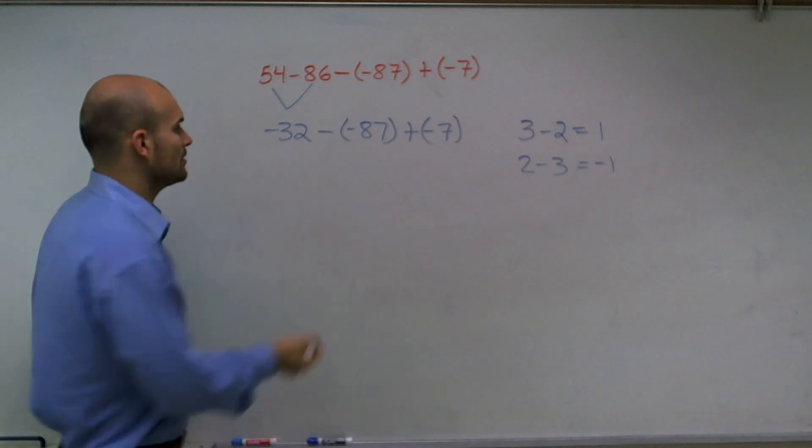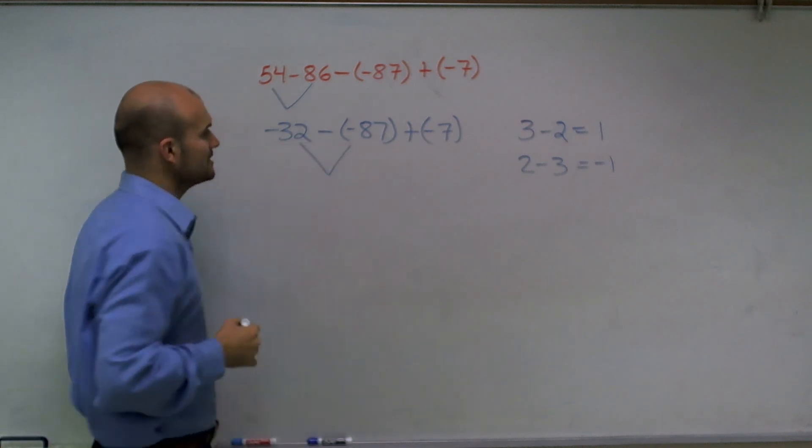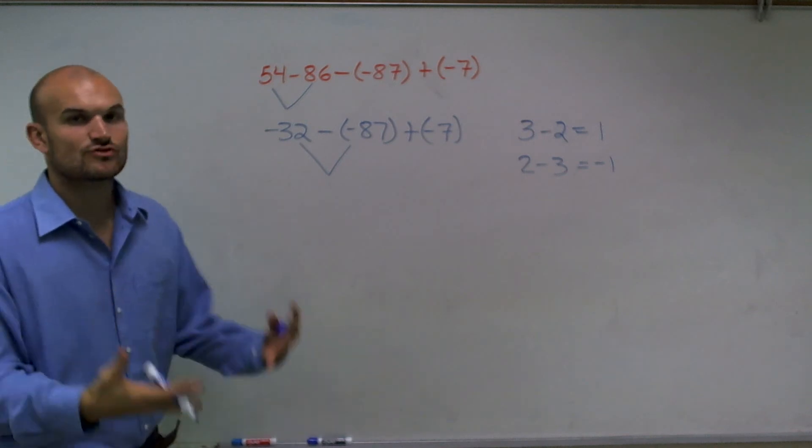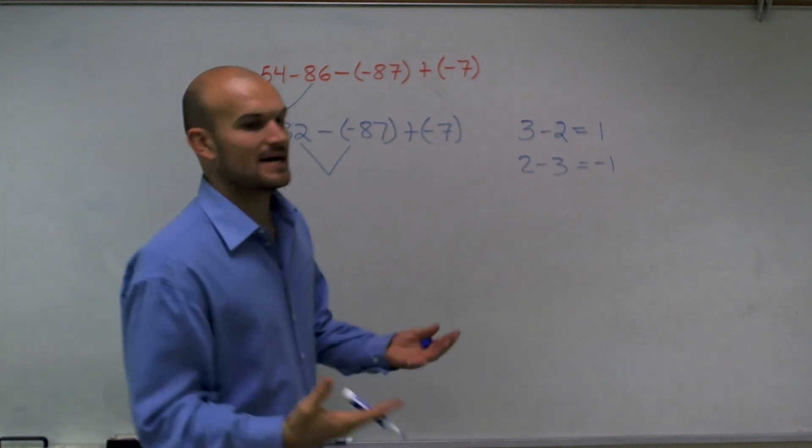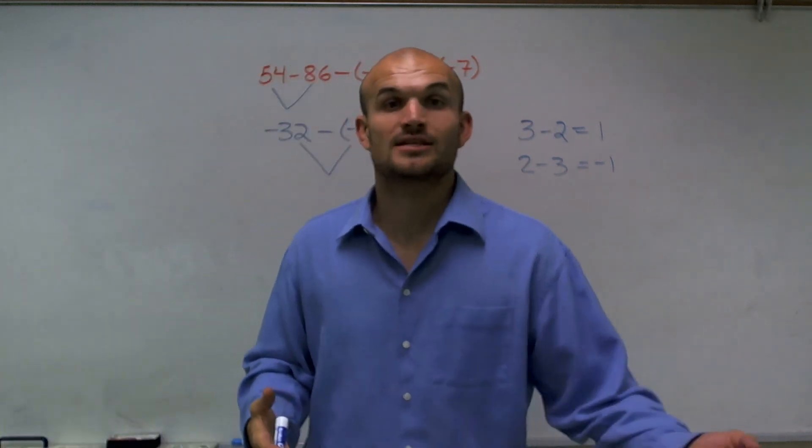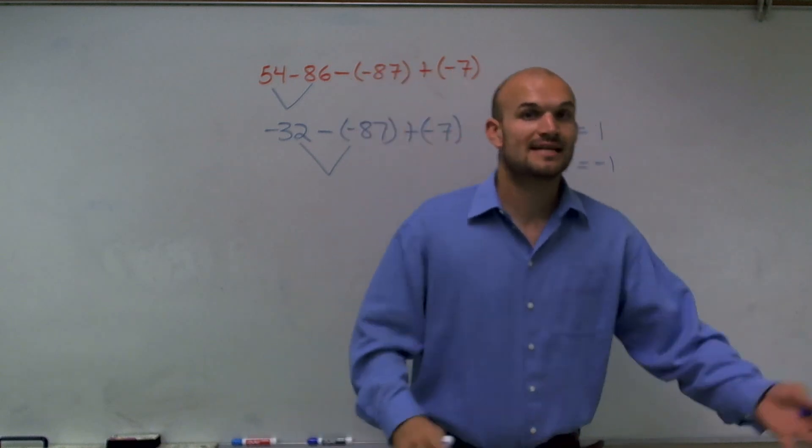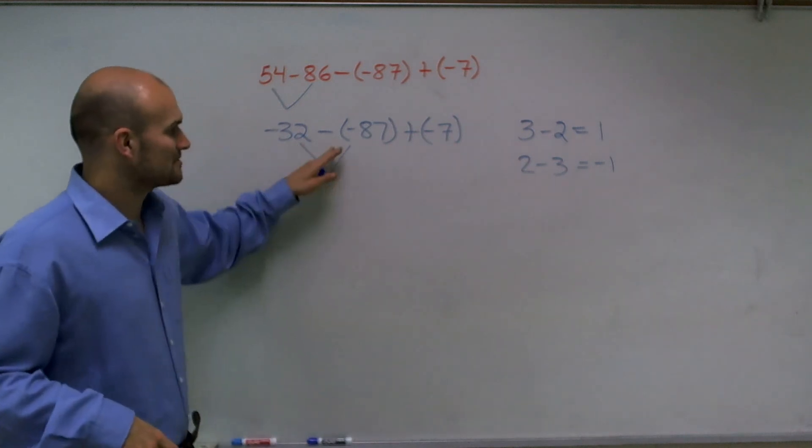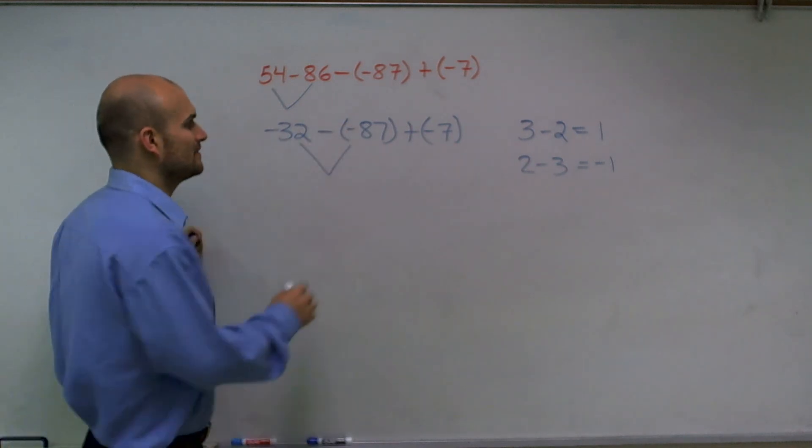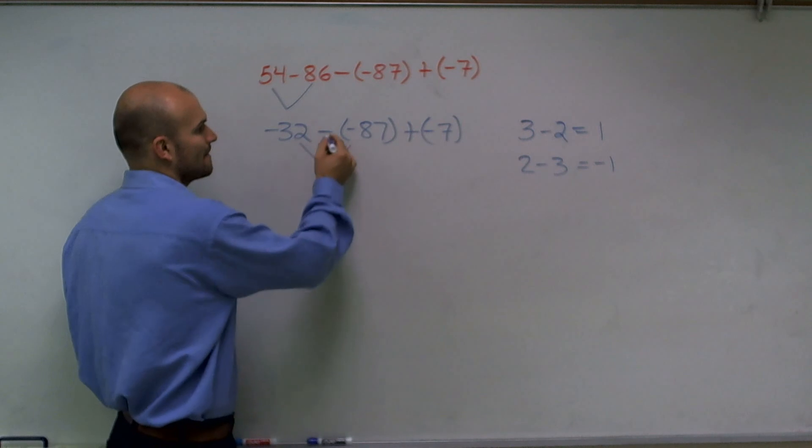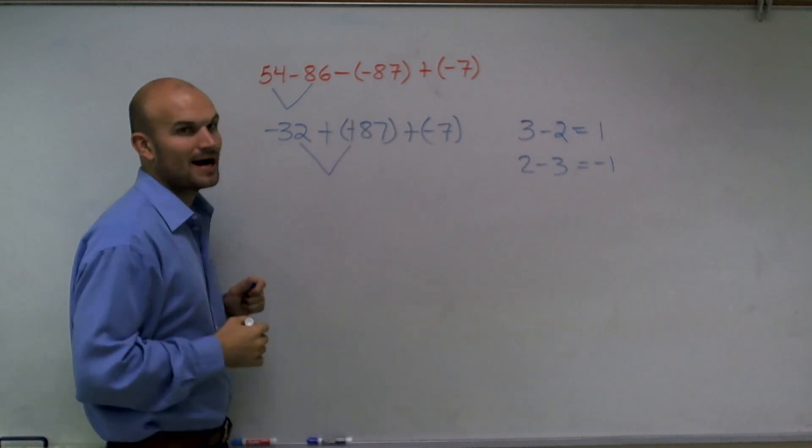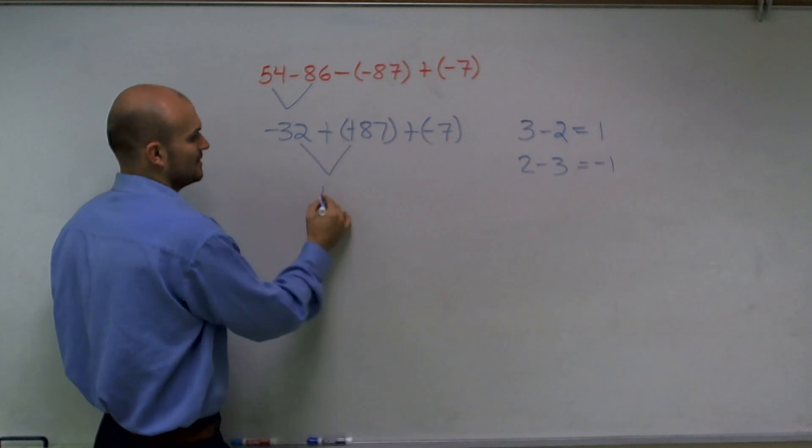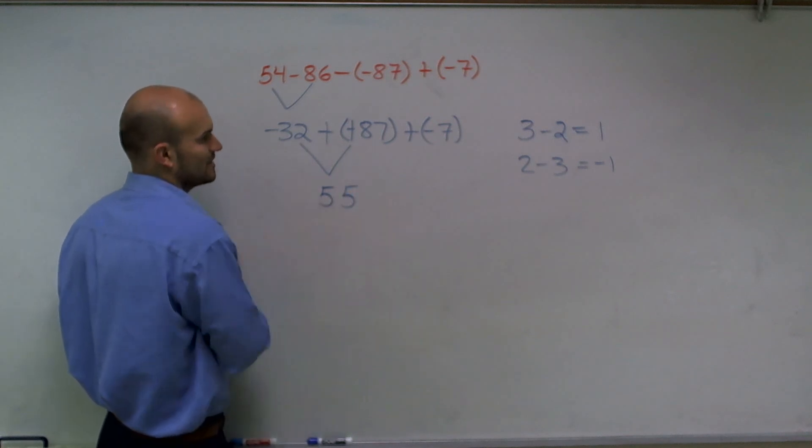Then the next thing, I'll just keep on working. Negative 32 minus a negative 87. Now, remember, when you subtract a negative, I always like to refer this with my students as like the double negative in English. You know, I don't not love math means you love math. So it's the same thing also in mathematics. If you have a double negative, that's the same thing as making that a positive. So now a negative 32 plus 87 is going to give us 55.